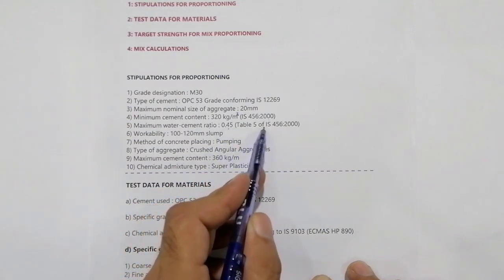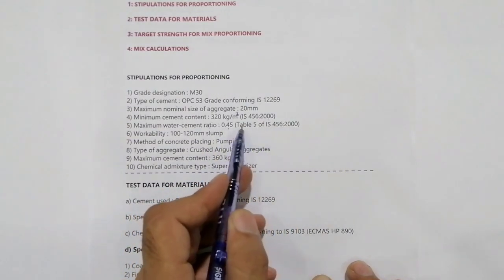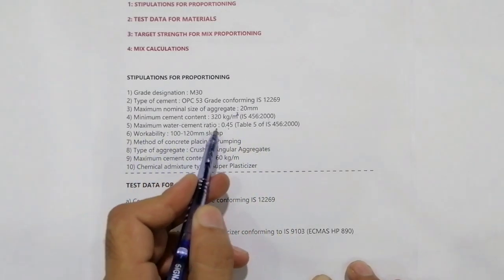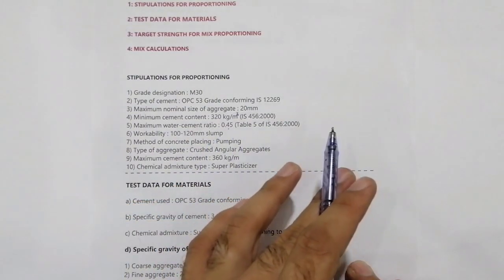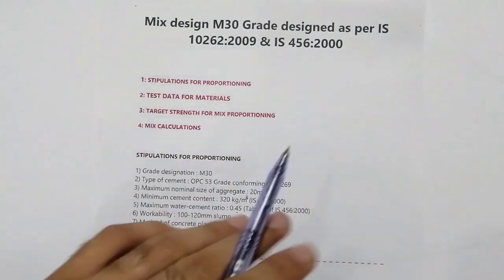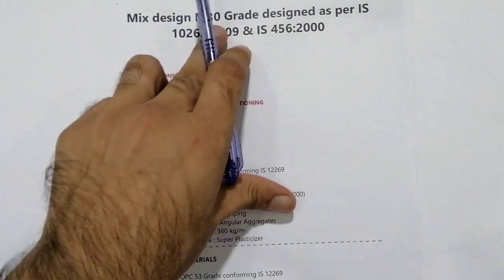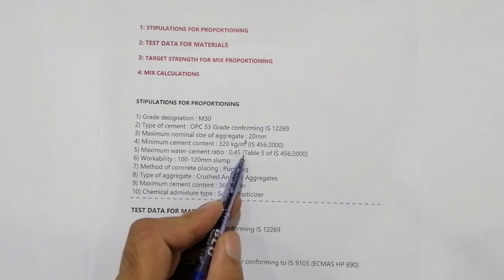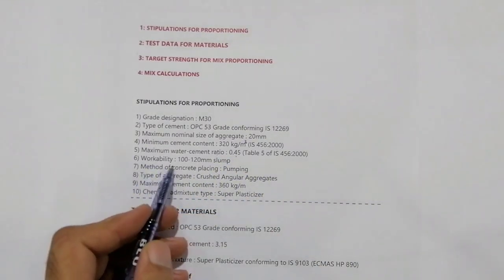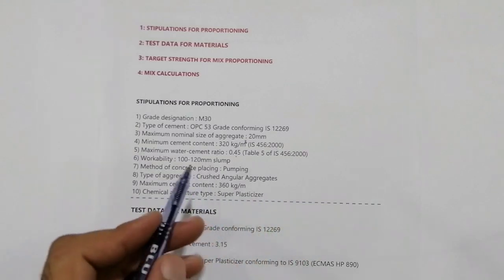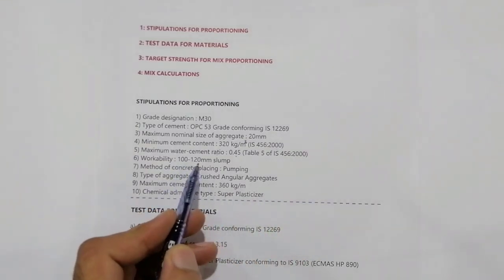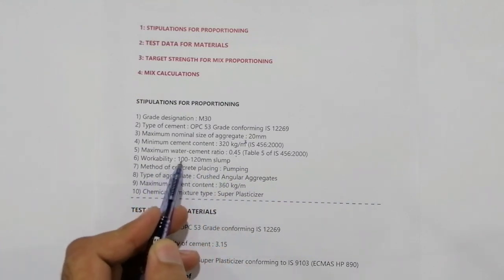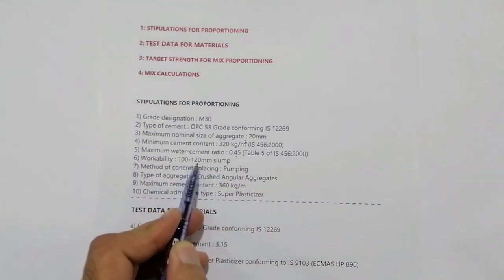Maximum water cement ratio for M30 grade concrete should be 0.45. The reference is Table No. 5 of IS 456:2000 — you can find this value in Table 5. Workability for M30 grade concrete should be from 100 to 120 millimeters slump.